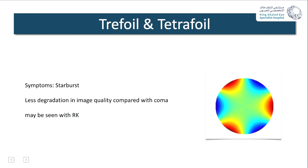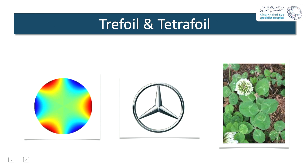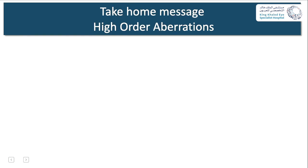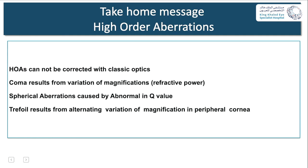Trefoil presents with starburst symptoms and degrades quality less than coma. It can be seen with tetrafoil in cases of radial keratotomy. The take-home messages for high order aberrations are: they cannot be corrected with classic optics; coma results from variation in magnification and refractive power; spherical aberration is caused by an abnormal Q value; and trefoil results from alternating variation of magnification in the peripheral cornea.